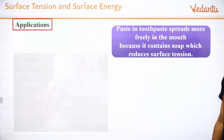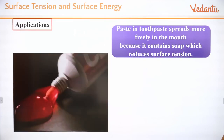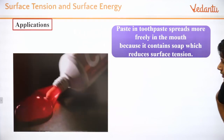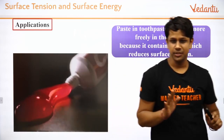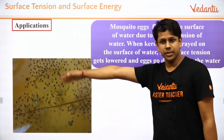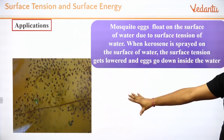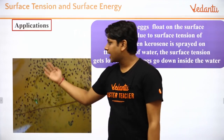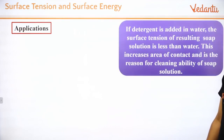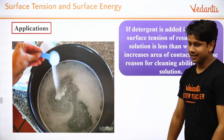Applications of surface tension: toothpaste reduces surface tension for better cleaning. Mosquito eggs float on the surface due to surface tension — when you sprinkle kerosene, surface tension decreases and the eggs sink, reducing breeding. When detergent or soap is added, surface tension decreases and cleaning of clothes improves.